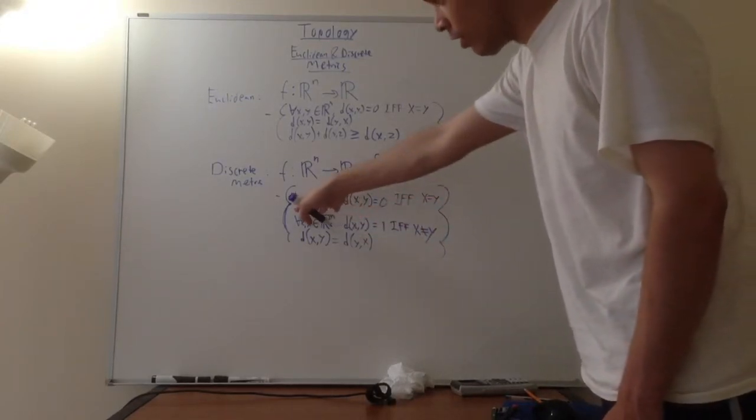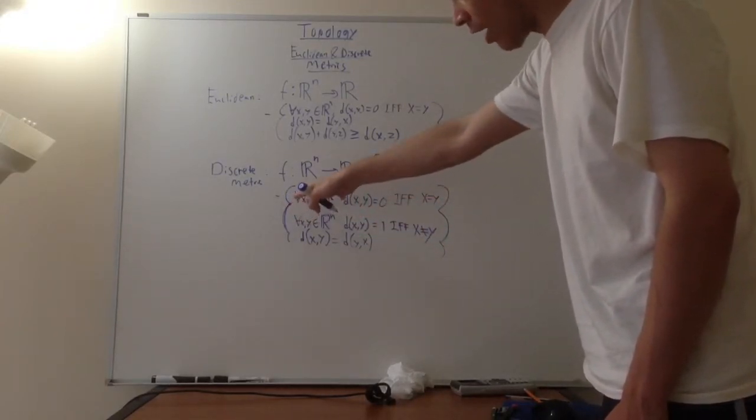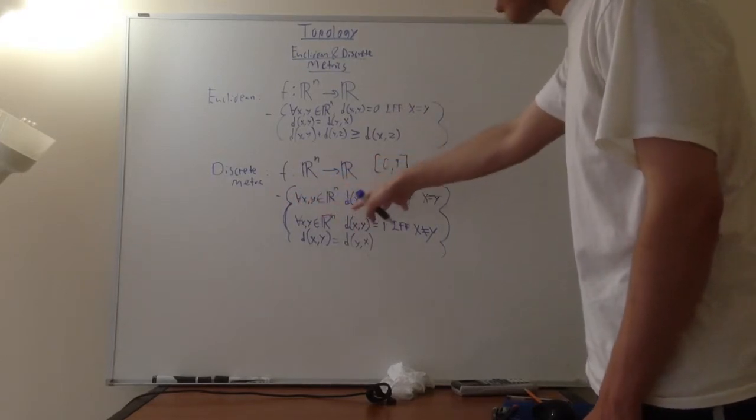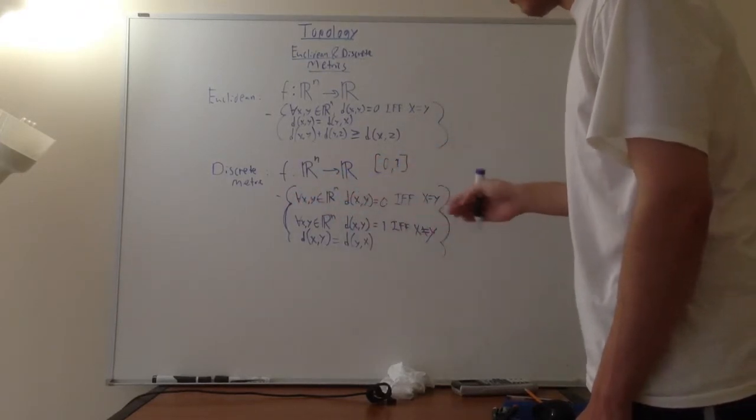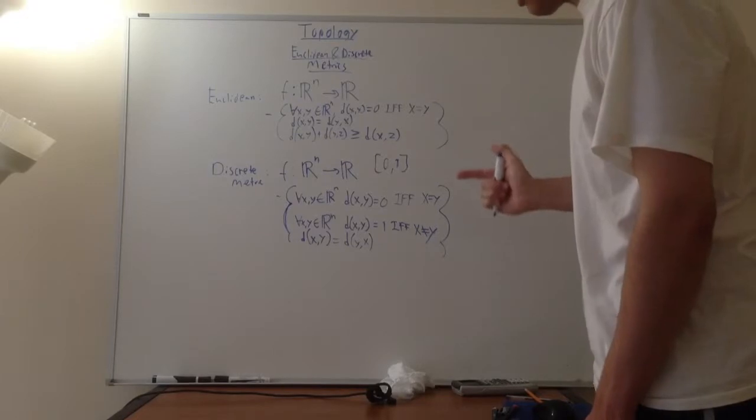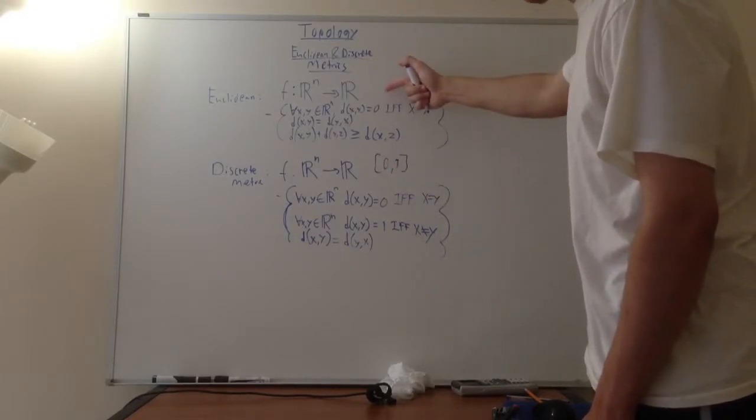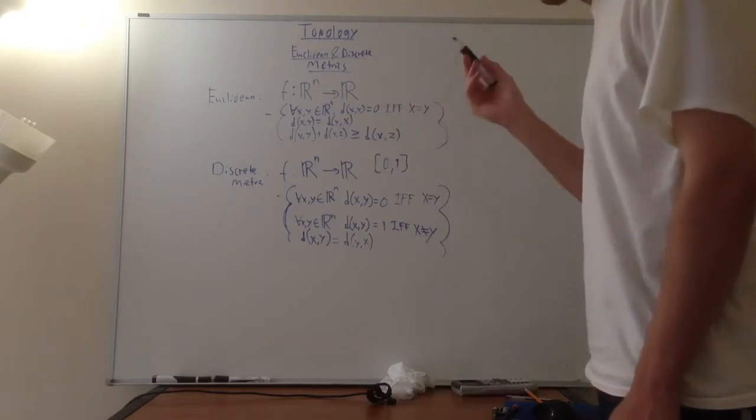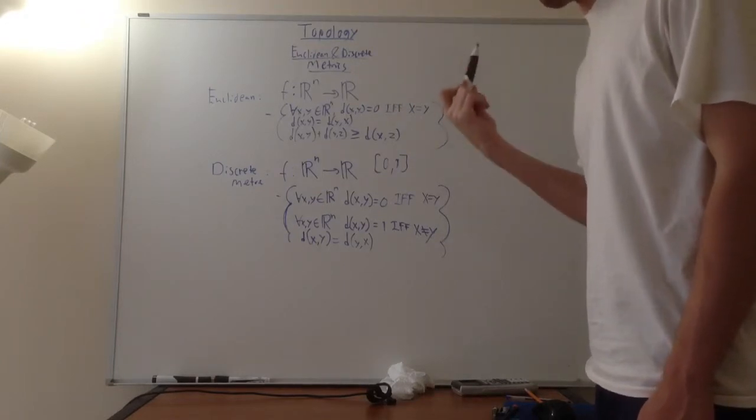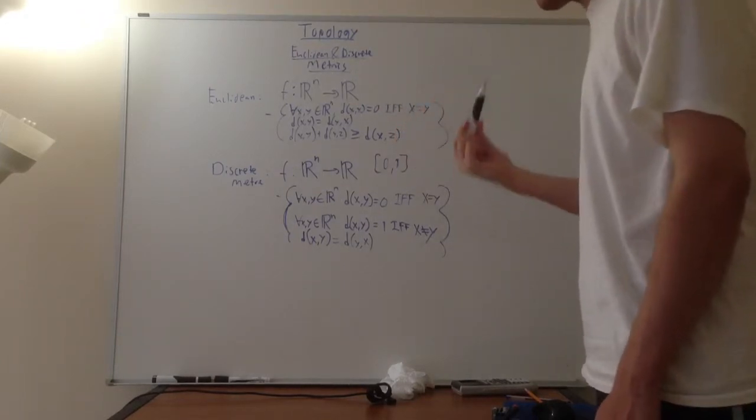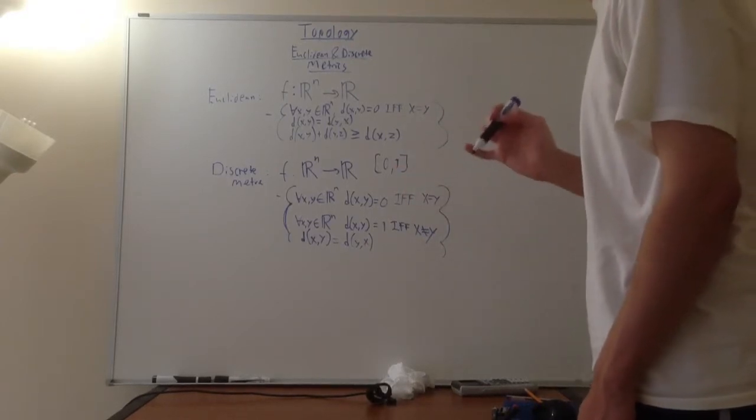Now, so for every x and y inside of R^n, the distance between x and y is equal to 0 if and only if x is equal to y. So, you'll see that the first axiom for the discrete metric that I've listed here is exactly the same as for the Euclidean metric. The distance between a point and itself is 0 for both the Euclidean and the discrete metric. So, that is the similarity between the two metrics.